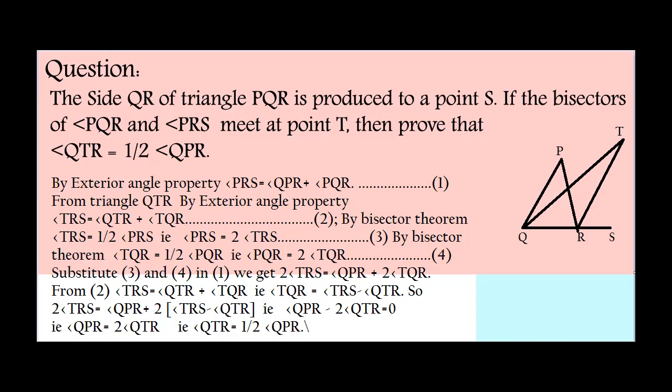From triangle QTR by exterior angle property, angle TRS equals angle QTR plus angle TQR. Moreover, by bisector theorem, angle TRS equals half of angle PRS.